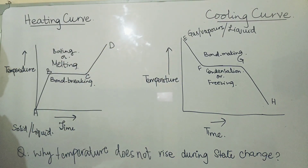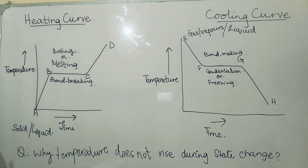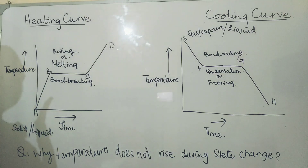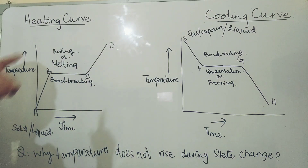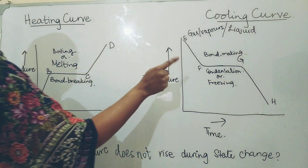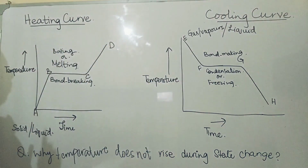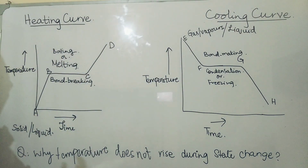Now coming to the cooling curve. As you can see on the board, if we are cooling gas or vapors, then from E to F, the temperature of the substance will decrease and it will become minimum. The state change will start occurring from F to G. At F, all the gas will start condensing, and from F to G we will find both states — the gas and the liquid.